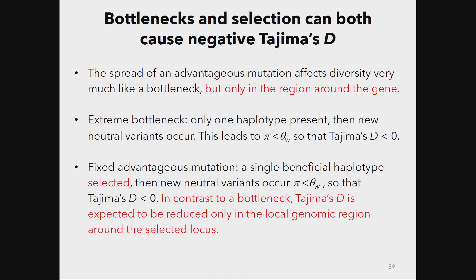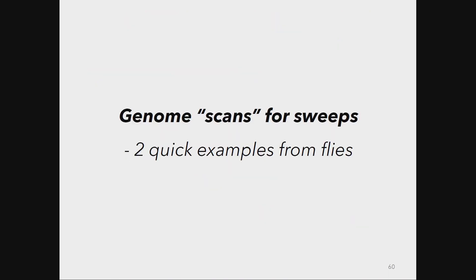A student noted that under a bottleneck you would expect to see the signal across the whole genome — and that's exactly right. We would expect a bottleneck to have a genome-wide effect on most parts of the genome, whereas a selective sweep would produce a localized reduction. So to finish this section: lots of people do genome scans for sweeps. There's great interest in using scans of variability across the genome to identify mutations favored by selection, with the hope of doing follow-up work to understand what those mutations do to phenotype.